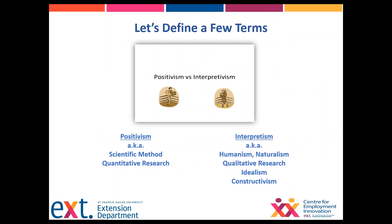Before going further, let's address academic research. There are two key terms to know: positivism — also known as the scientific method or quantitative research — versus interpretivism, which you may have heard called humanism, naturalism, qualitative research, idealism, or constructivism. All types of research generally fall into one of these two camps.